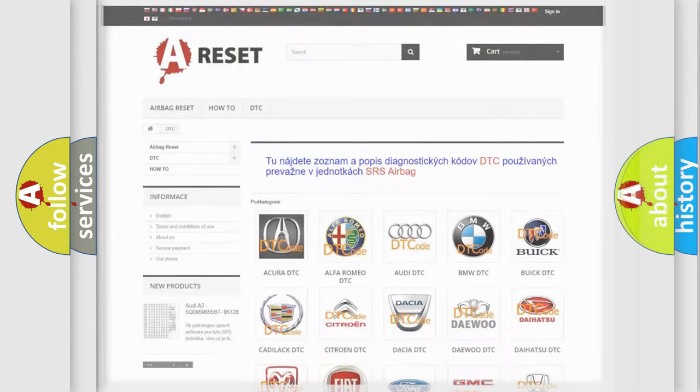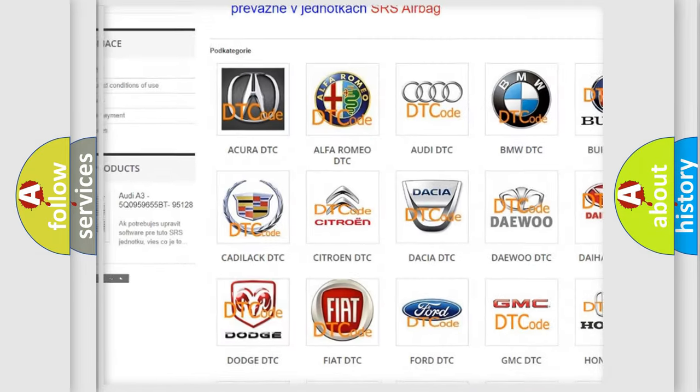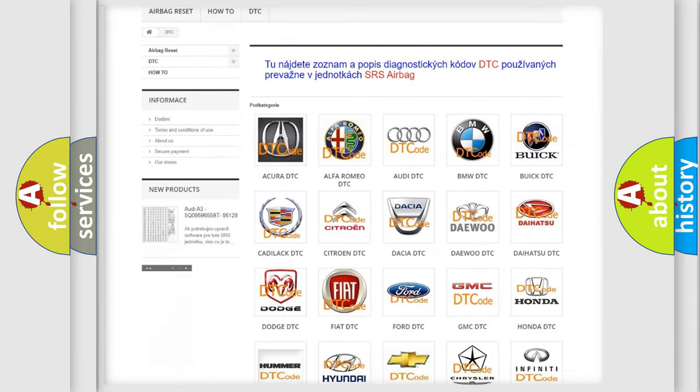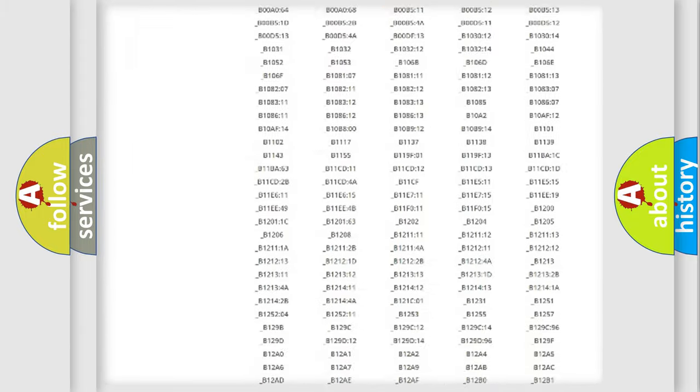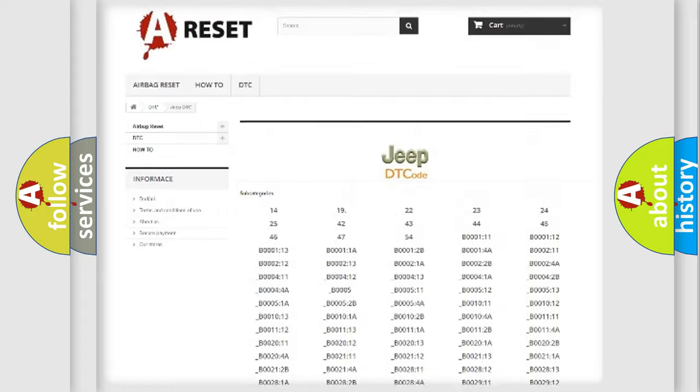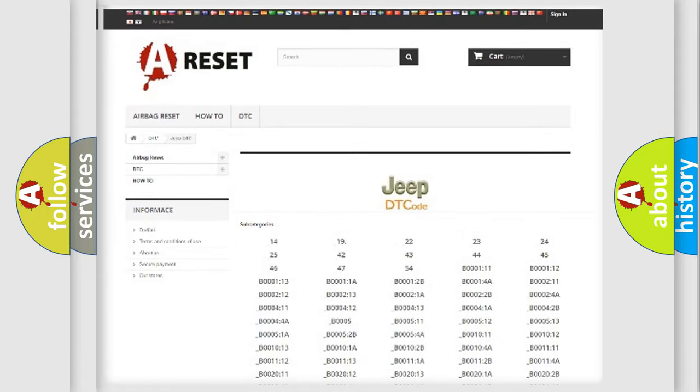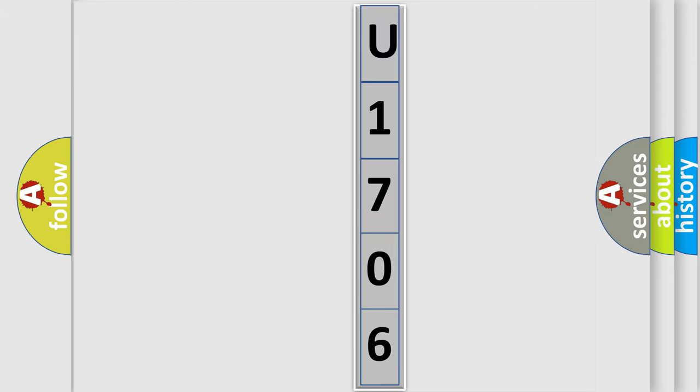Our website airbagreset.sk produces useful videos for you. You do not have to go through the OBD2 protocol anymore to know how to troubleshoot any car breakdown. You will find all the diagnostic codes that can be diagnosed in Jeep vehicles, and also many other useful things. The following demonstration will help you look into the world of software for car control units.